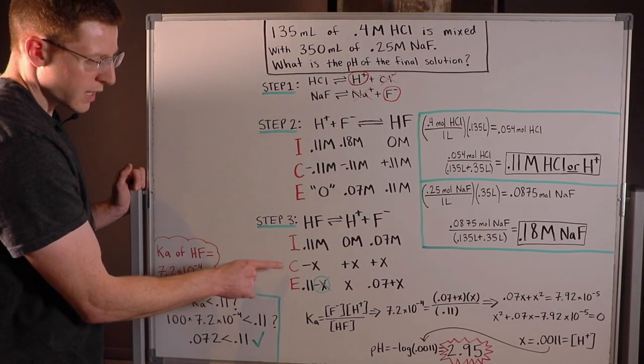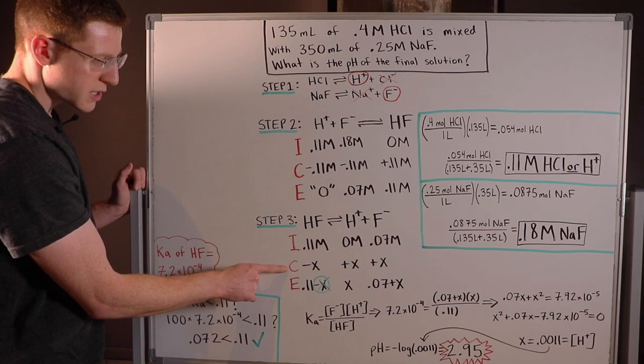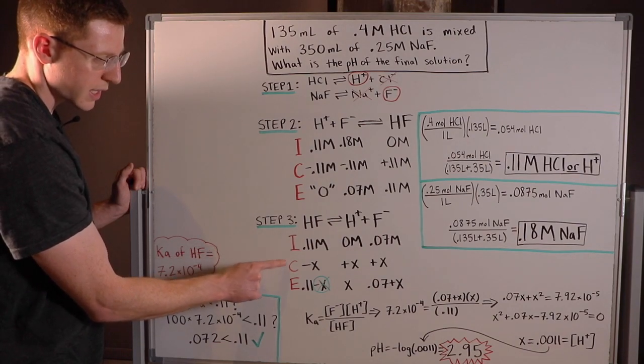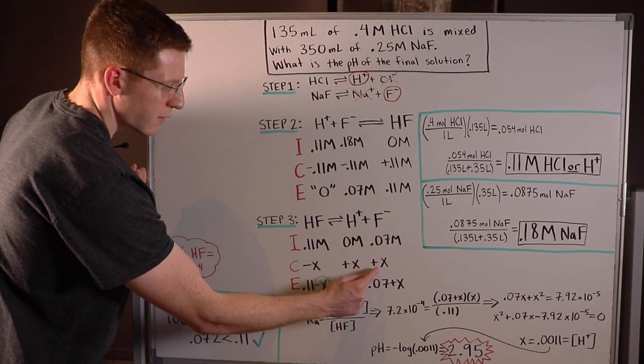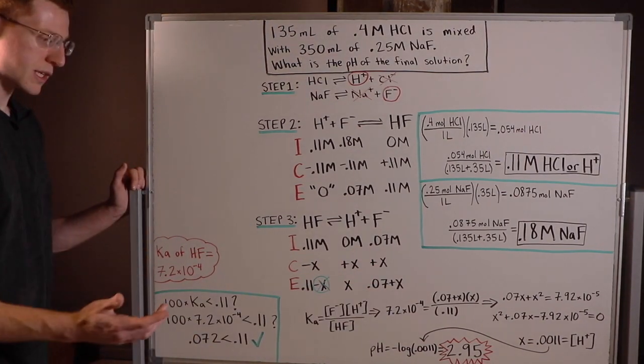My equilibrium row is simply the I row plus the C row. 0.11 minus X is 0.11 minus X. Zero plus X is X. And then 0.07 plus X is 0.07 plus X.